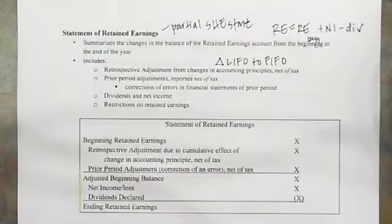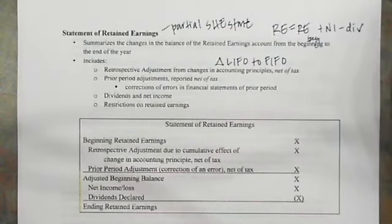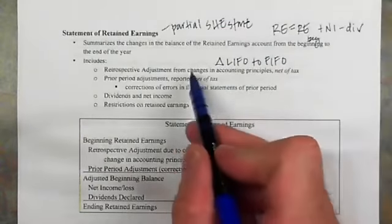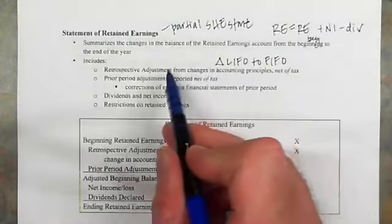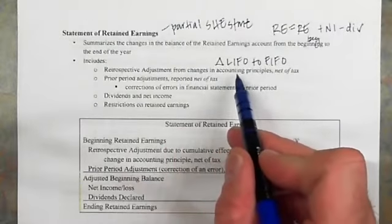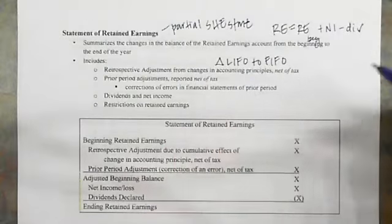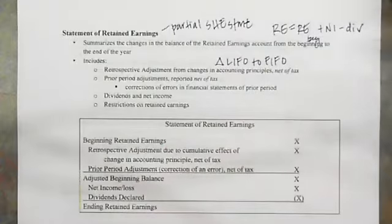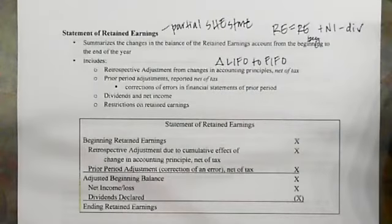For example, changing from LIFO to FIFO would be a change in accounting principle, as would a change in revenue recognition techniques. If the firm changes in the current year, we have to make adjustments for prior years and bring them forward, then adjust the statement of retained earnings.